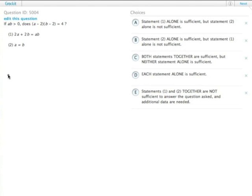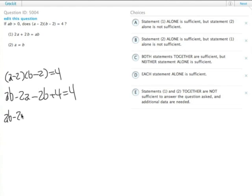We can multiply that out and probably should. So a minus 2 times b minus 2 equals 4. So this is ab minus 2a minus 2b plus 4 equals 4. We can subtract the 4 from both sides, so then we have ab minus 2a minus 2b equals 0.